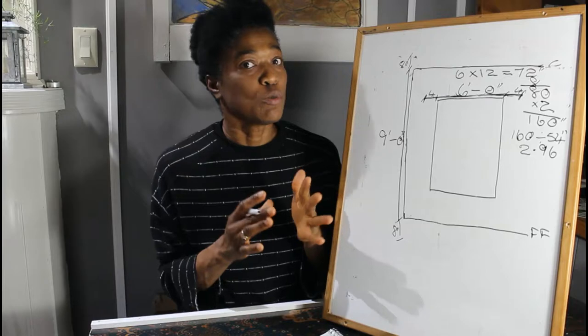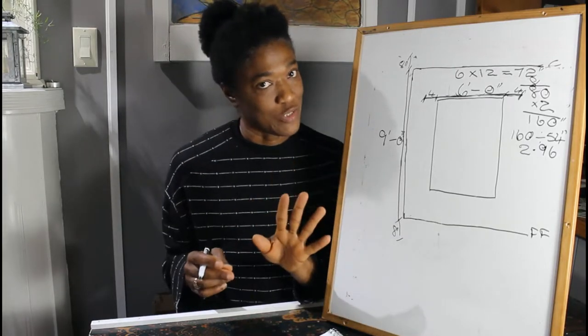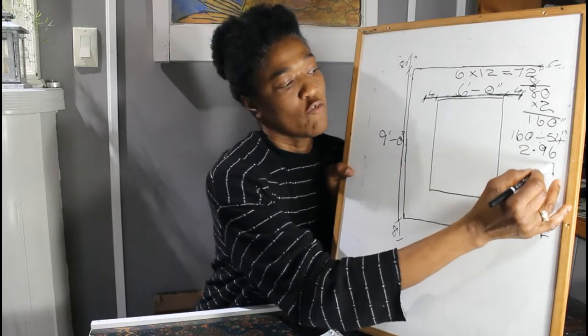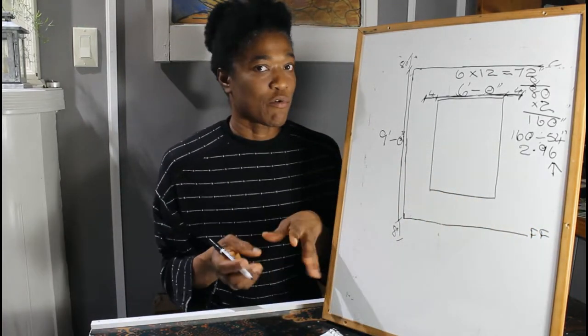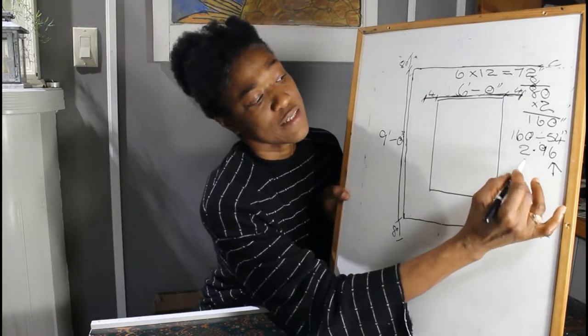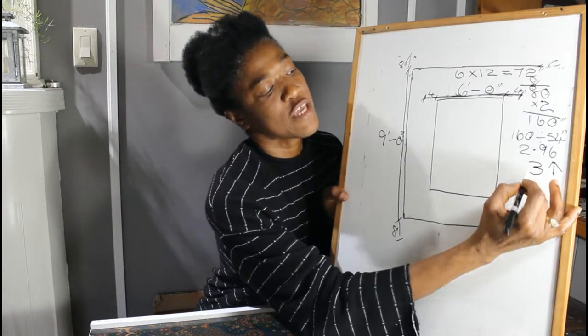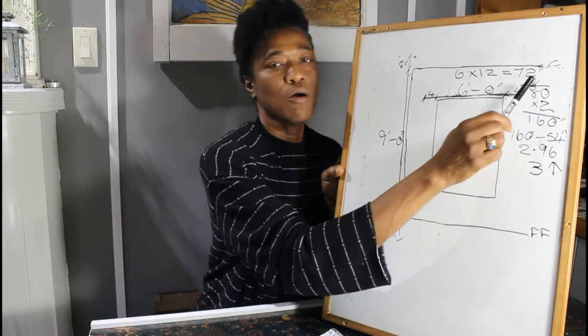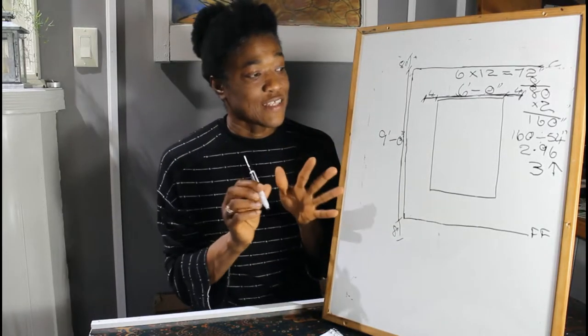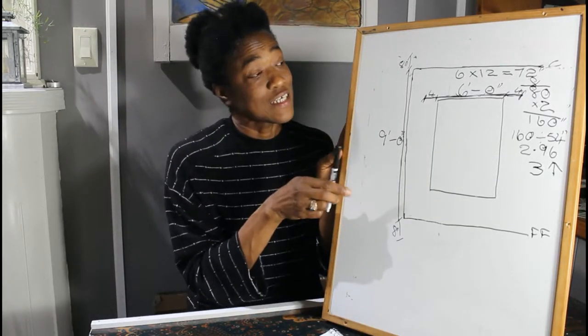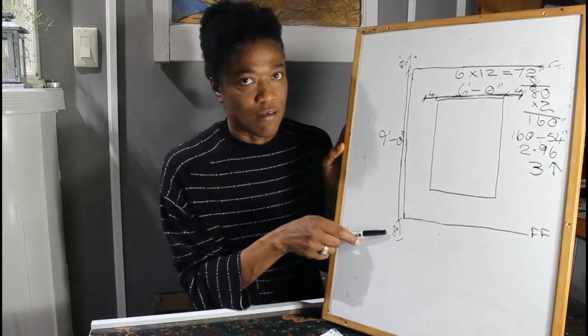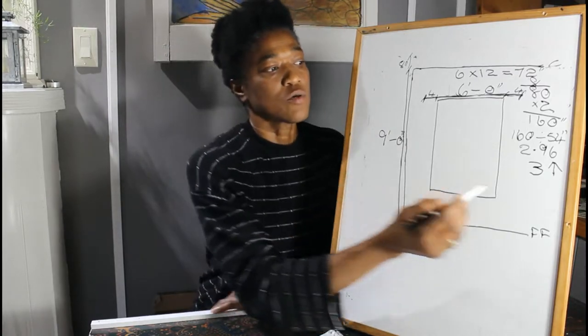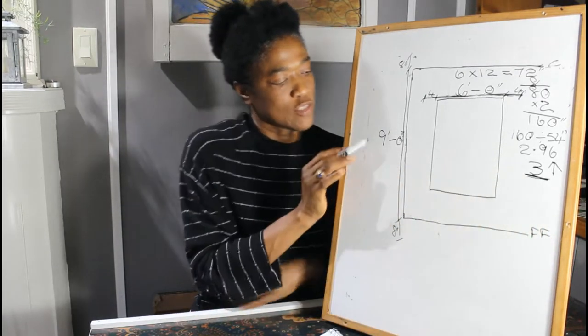So 160 divided by 54, that's 2.96. But no, we actually round up our number to get the number of widths that we need. So rounding this up, we'll get three. So we need three widths of fabric to cover our window. The next thing we'll do is calculate the length that we need for our draperies. We have the three widths here, we leave that for now.